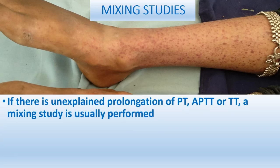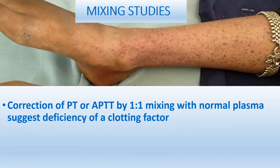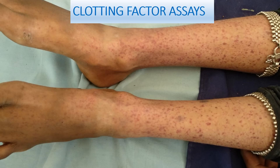Mixing studies: if there is unexplained prolongation of PT, APTT, or TT, mixing studies are performed. Normal plasma is added to patient plasma and PT and APTT are repeated. If PT or APTT is corrected by 1:1 mixing with normal plasma, that means there is a deficiency of a clotting factor. If PT or APTT is not corrected or only partially corrected, an inhibitor is present — rule out lupus anticoagulant or inhibitors from HIV or viral infection. Based on these results, specific clotting factor assay should be performed.